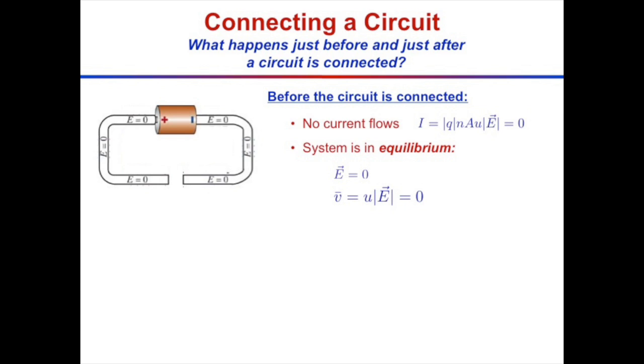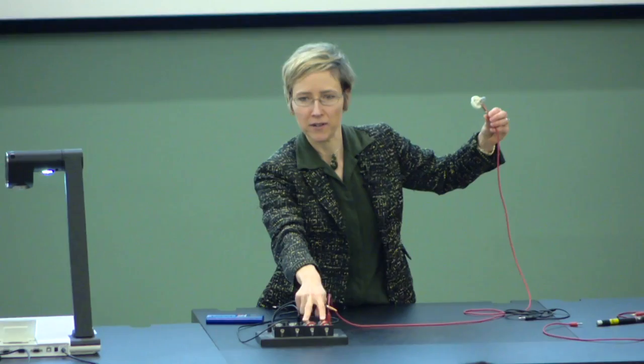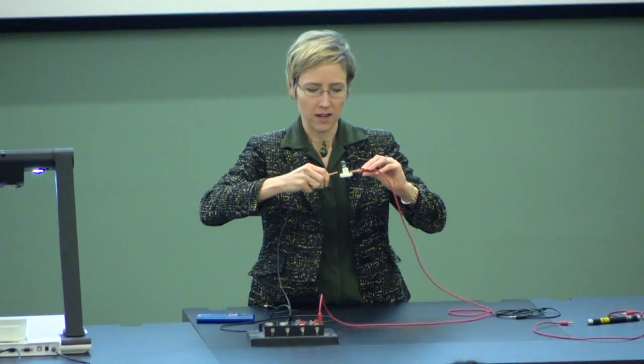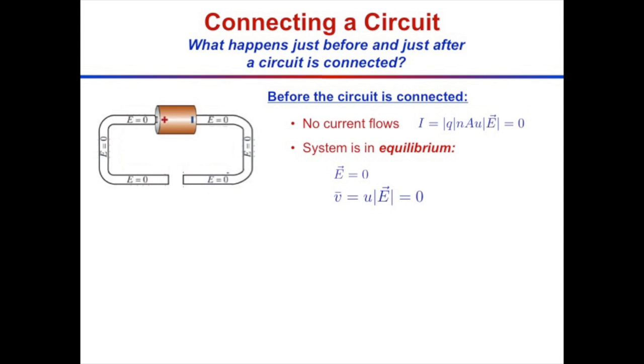Let's think about what happens when we connect the circuit. I have two D-cell batteries, 1.5 volts each giving three total volts, hooked up to a light bulb. Once it's connected, there's clearly a current because the light bulb lights up. But take it off and there's no current — put it on and there's current. So we'd like to think about what is going on microscopically on really fast timescales as we do this process. Before it's connected, there's no current flowing — the system is in equilibrium.